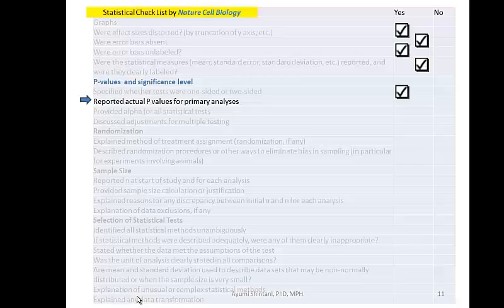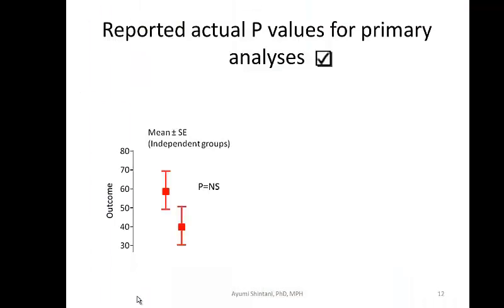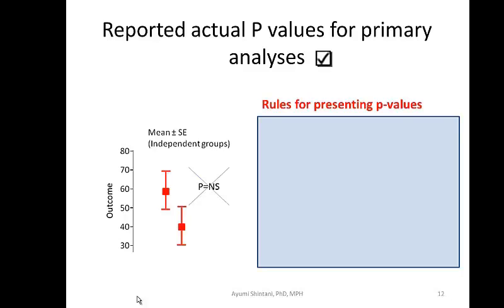And the next one, reported actual p-value for primary analysis. I've seen many cases when people put the p equal and that's not significant. So this is not the recommended practice. Even when the p-value is greater than 0.05, it's better to put the exact value for p-value. So here is the rules in the New England Journal of Medicine and JAMA or Nature Cell Biology used to format the p-value.